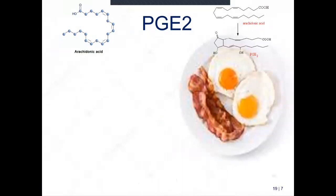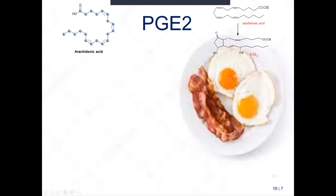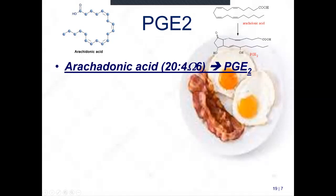There are three prostaglandin groups: 1, 2, and 3. Starting with Group 2: the precursor is arachidonic acid, which when folded correctly by the enzyme becomes the prostaglandin Group 2 family — abbreviated PG with various letters like PGE2 or PGF2. The '20' in the name means 20 carbons (20 zigzags), '4' means four double bonds, and it starts omega-6: double bonds at positions 6, 9, 12, and 15.